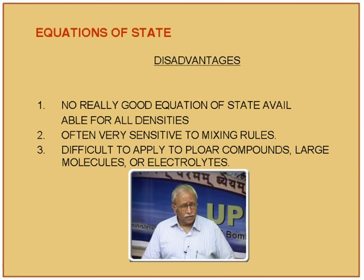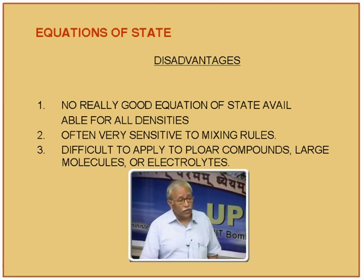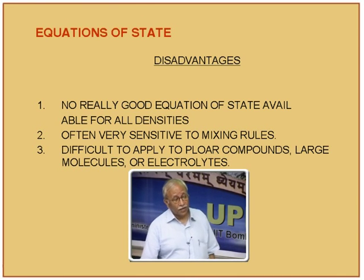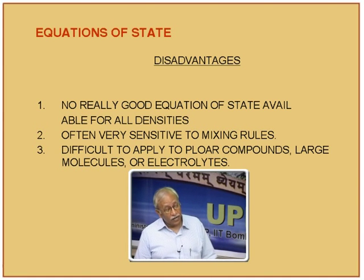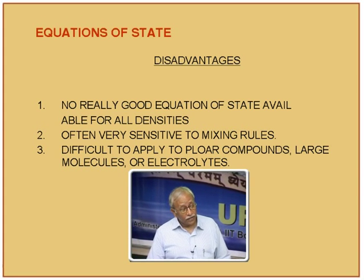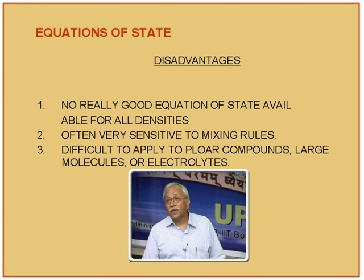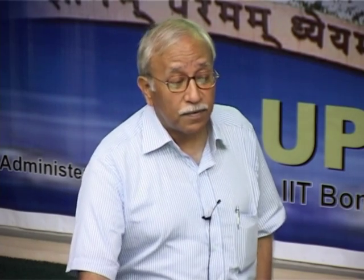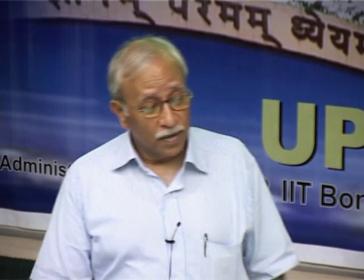There are some disadvantages: no really good equation of state is available for all densities. The ones which predict densities nicely do not predict other properties nicely, so thermodynamic consistency is lost. They are sensitive to mixing rules, and binary interaction parameters make the job even more difficult. They are also difficult to apply to polar compounds, which we have not talked about much. Predictions are good primarily for hydrocarbon systems or mildly non-ideal systems. For polar systems — for example, ethanol-water, oxygenated compounds with water, large molecules, or electrolyte systems where ions can be present — these equations do not work well.